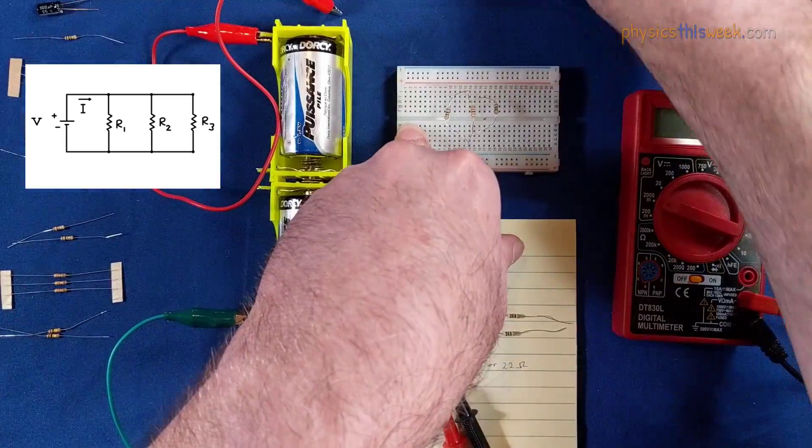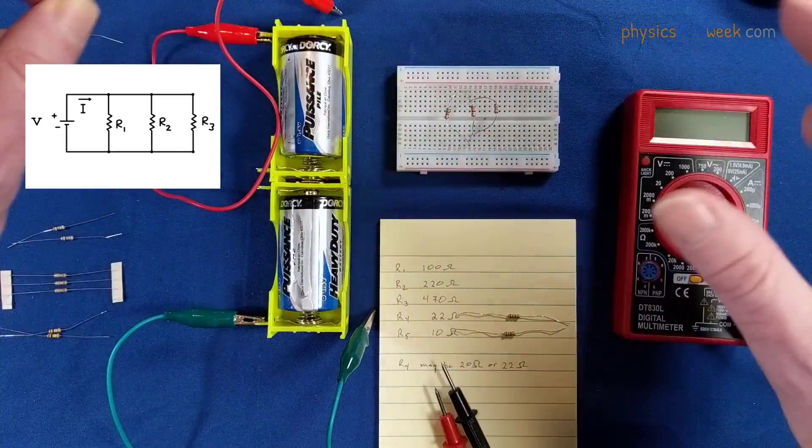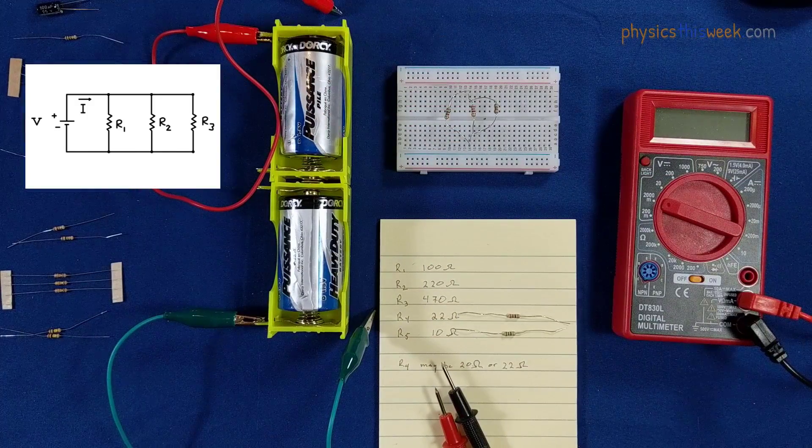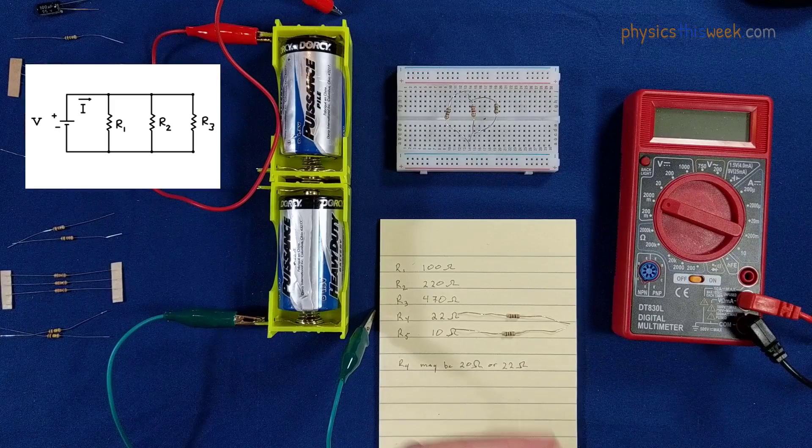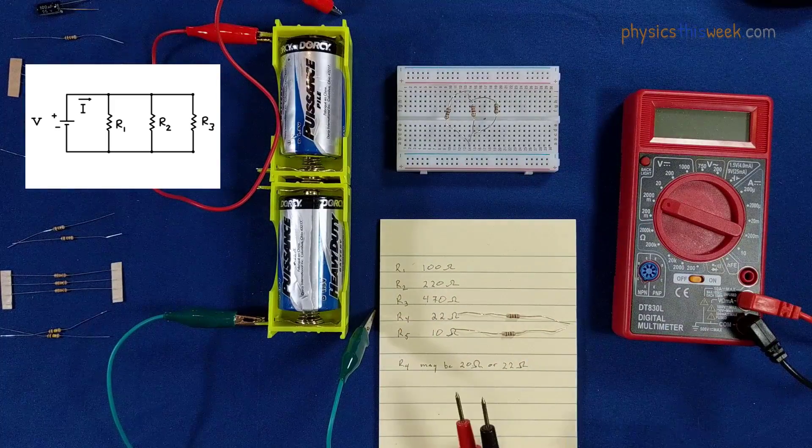Now the lab kit does have these jumpers. You could make it look a little more parallel, but this way is good enough for what we're working with. So that's the setup for the parallel circuit.